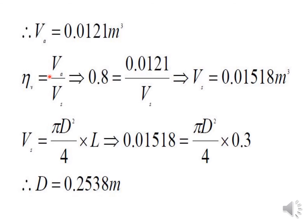Now, volumetric efficiency = actual volume of air supplied / swept volume. Actual volume Va = 0.0121 m³ is calculated, and volumetric efficiency = 0.8 is given. With one unknown (Vs), we solve to get swept volume Vs = 0.01518 cubic meters.